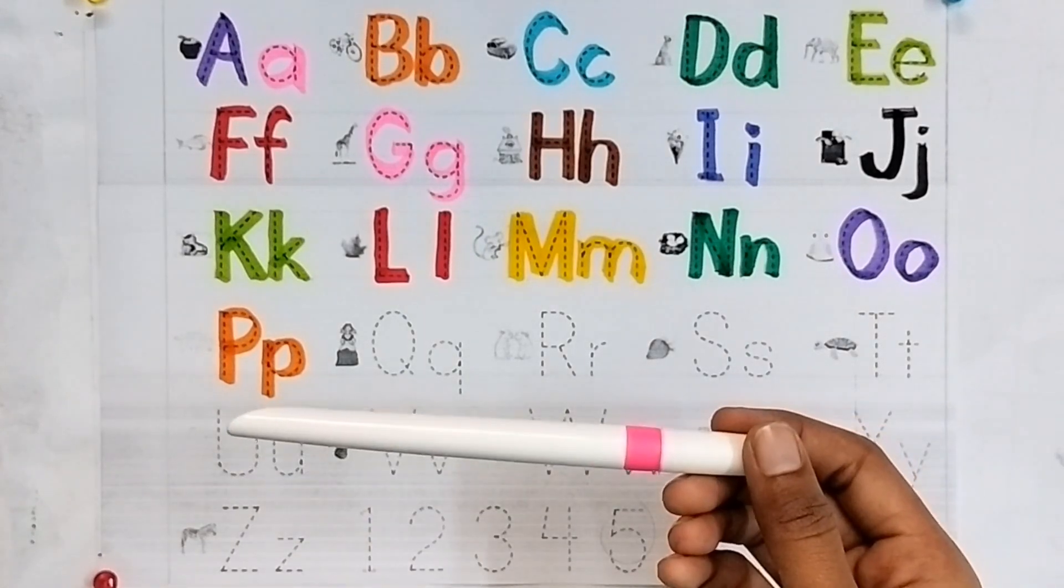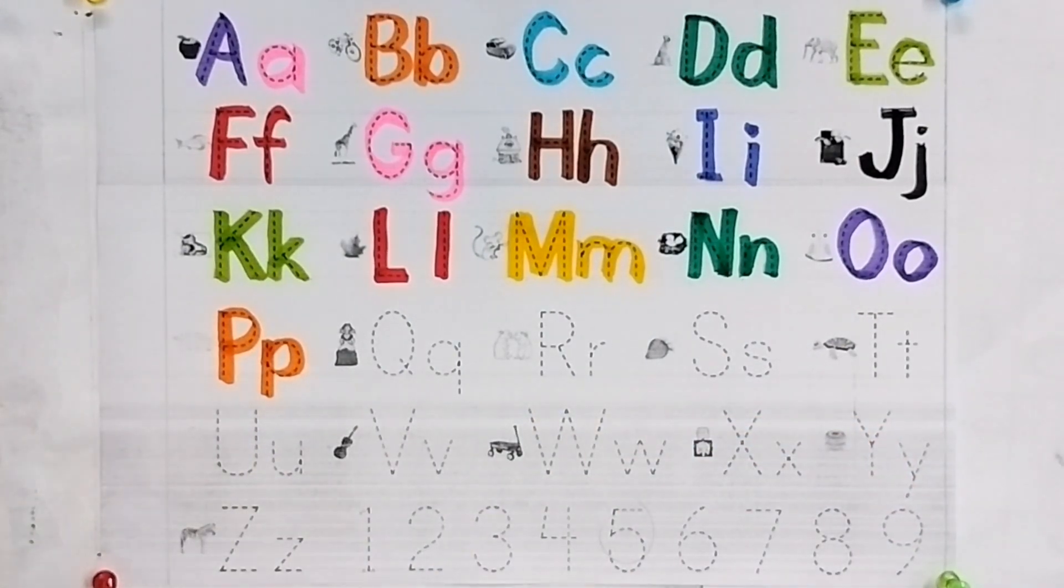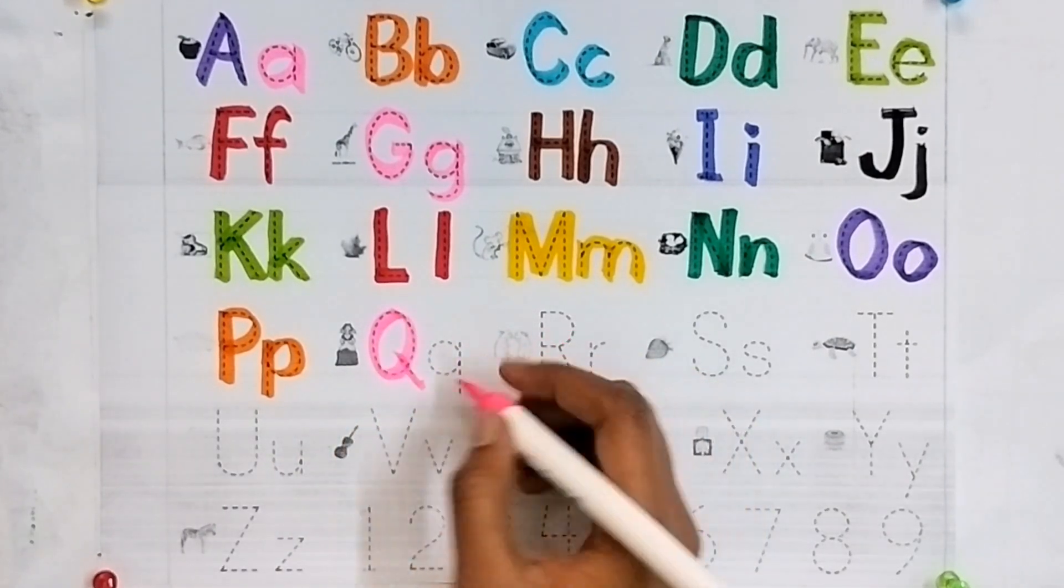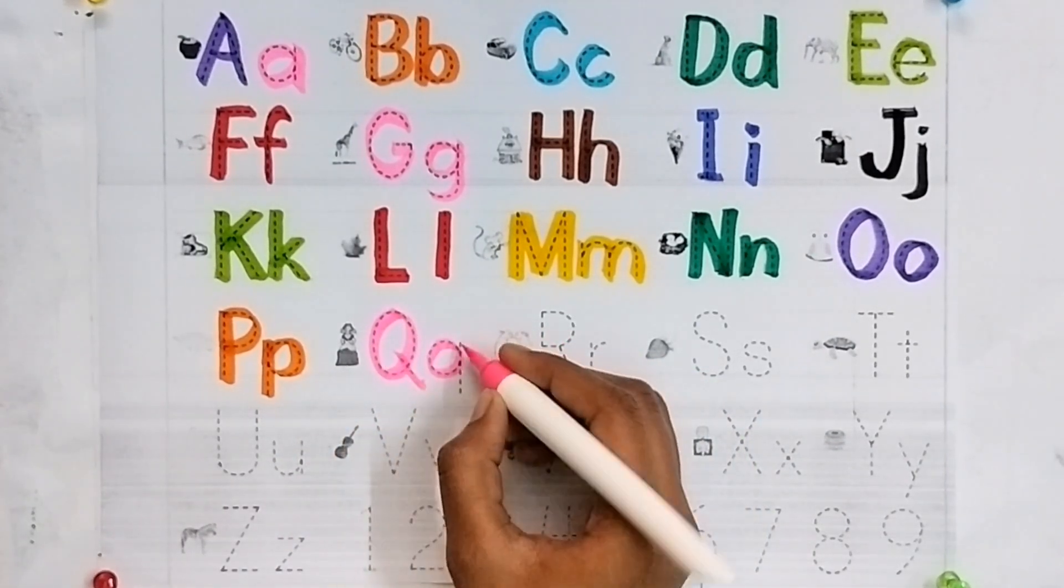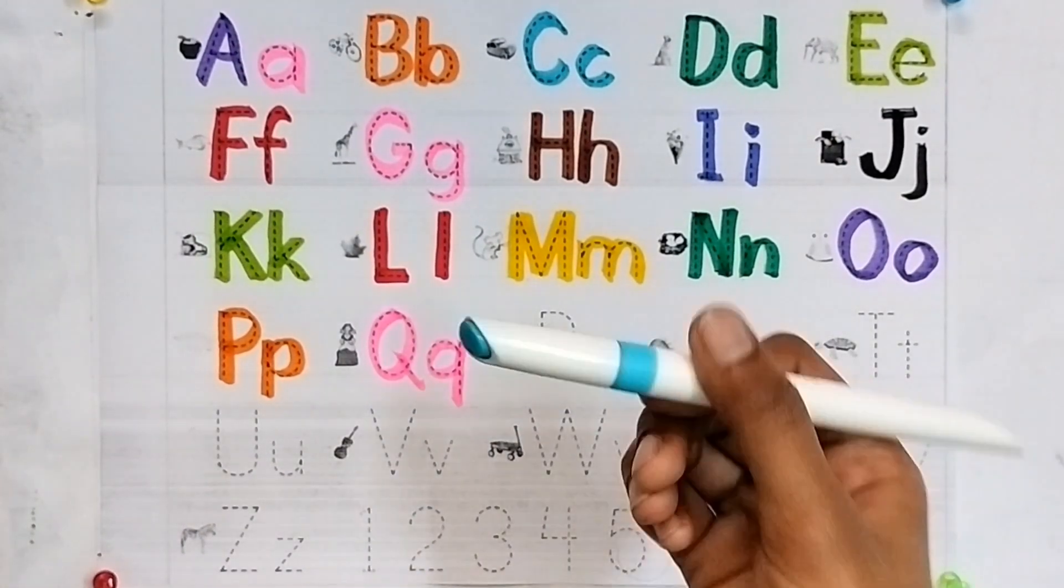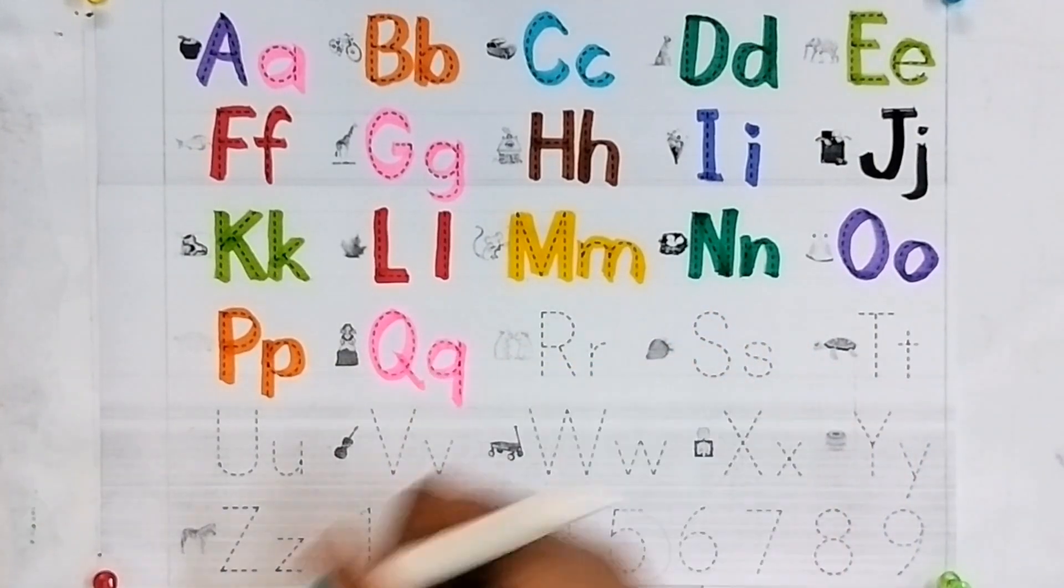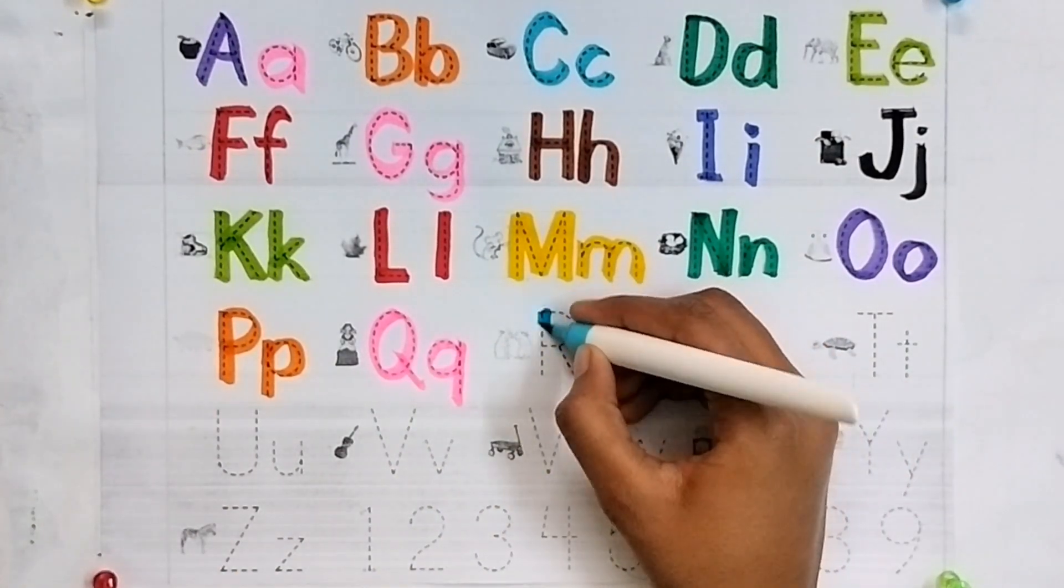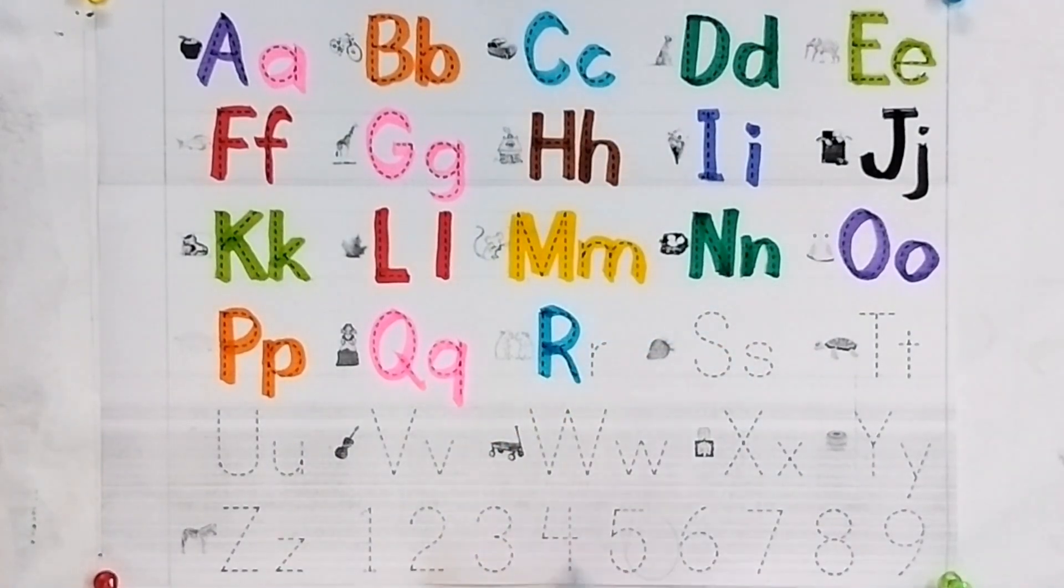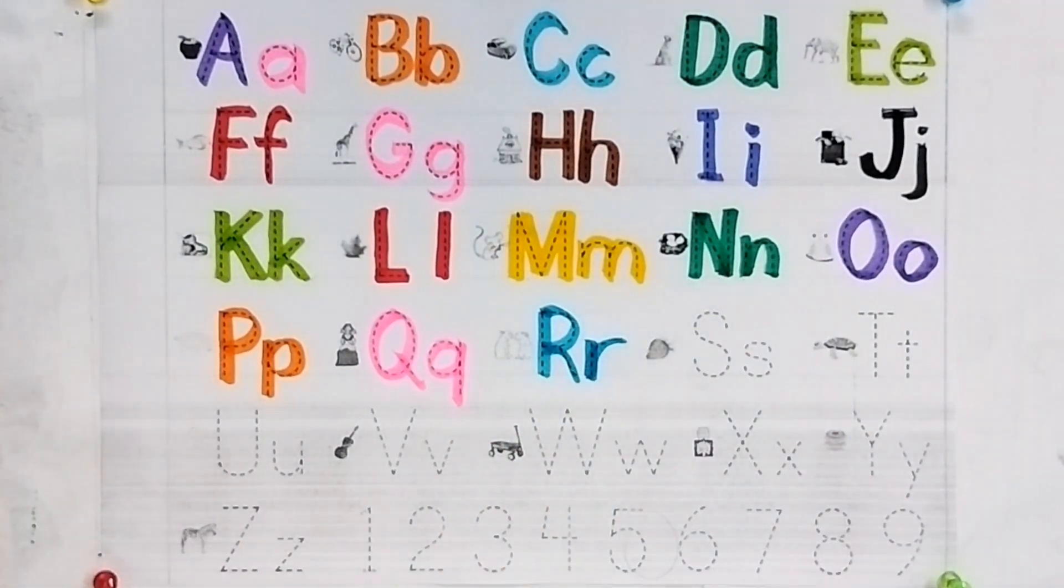Pink color. Q for queen. Light blue color. R for rose. Small r. R for rain.